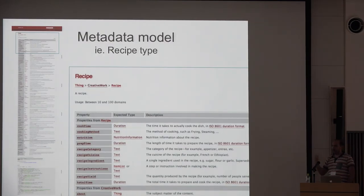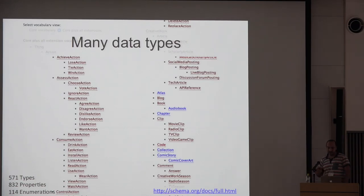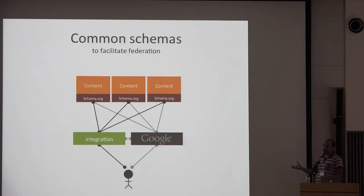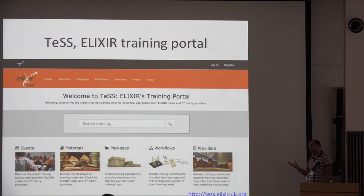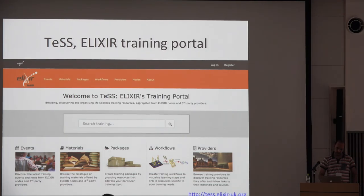Schema.org follows a model based on classes or types — properties, type, and description. They have 571 types in total, not counting extensions. Google and other providers use schema.org to standardize how data is exposed, and you can crawl that structured data yourself. In Elixir we have a training portal based on schema.org and Bioschemas, doing automatic crawling using APIs and schema.org, and you can build on top of that — including RDF.